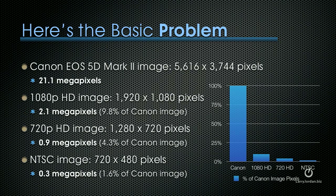Here's the basic problem with getting good quality images. A Canon EOS 5D Mark II shoots an image which is 5,616 pixels across by 3,744 pixels high. When you multiply those numbers it creates 21.1 megapixels — 100% of the image, as represented by the blue bar on the left in the chart. When we move down to 1080p HD, that's 1920 pixels by 1080 pixels, which translates to 2.1 megapixels.